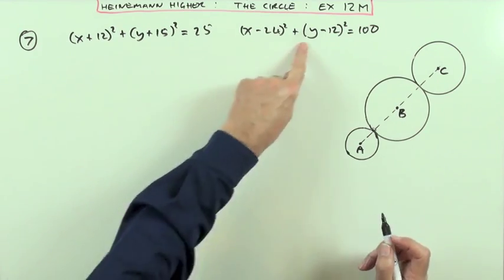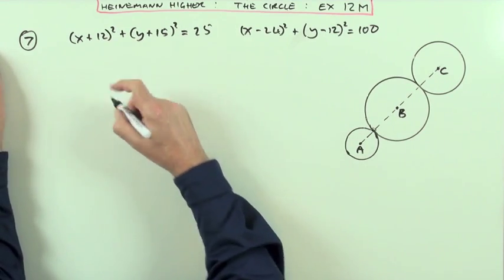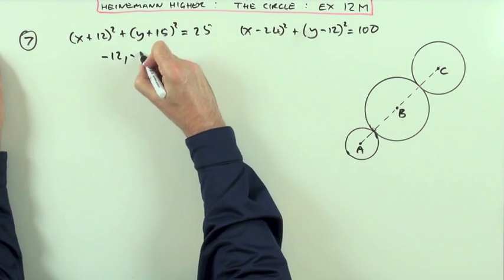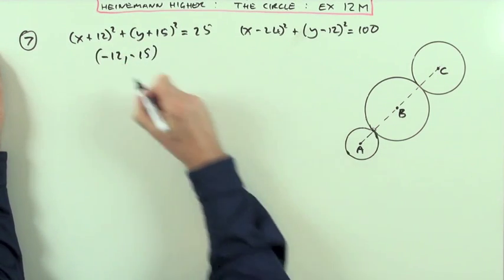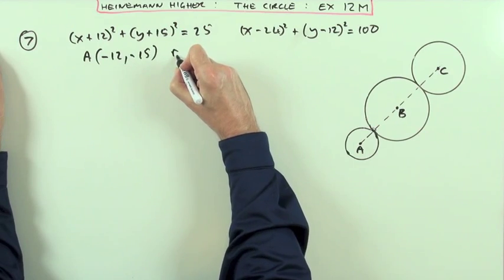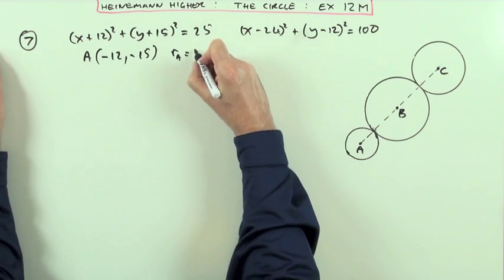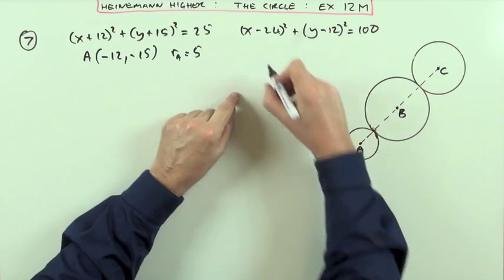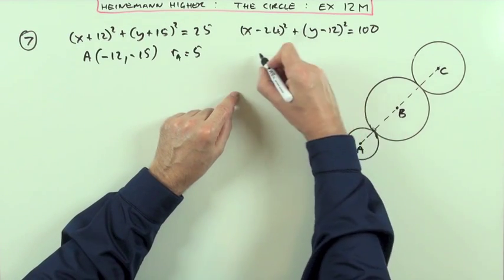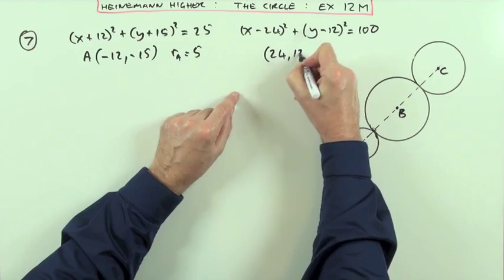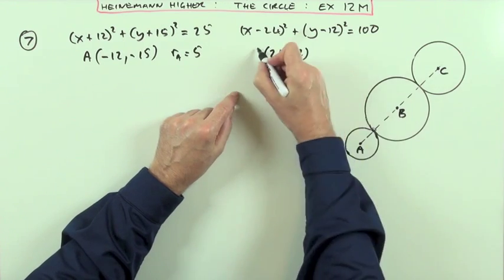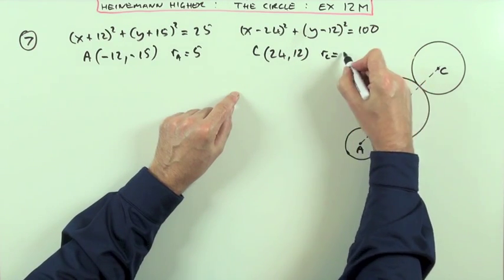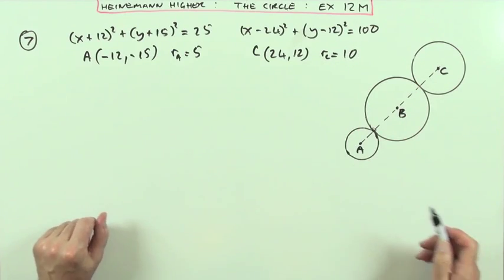First, extract the geometrical information from the equations. Circle A has its center at (-12, -15) and its radius is the square root of 25, which is 5. Circle C has its center at (24, 12) — remembering the sign convention for x minus a and x minus b — and its radius is the square root of 10.